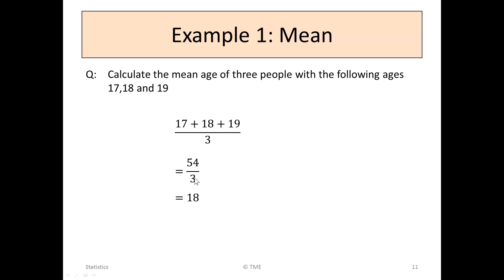And that shouldn't be surprising that the mean, the arithmetic average, lies between the lowest and the highest. It had to be between 17 and 19. It had to be higher than 17, lower than 19. So this number here, 18, appears to be correct.